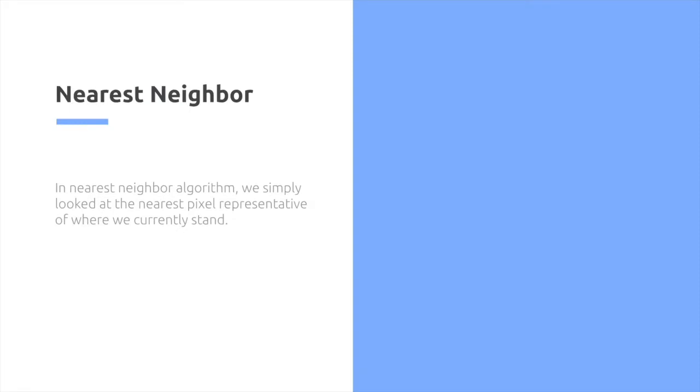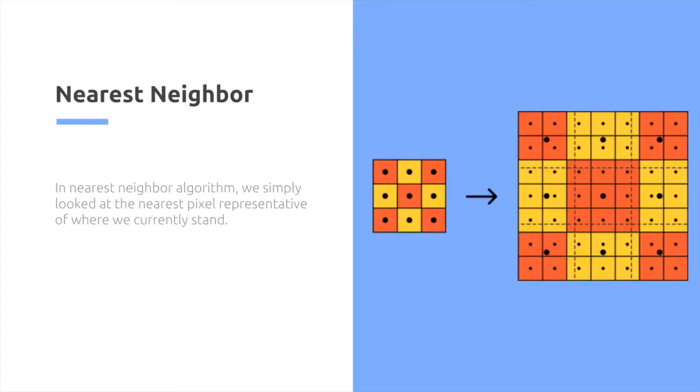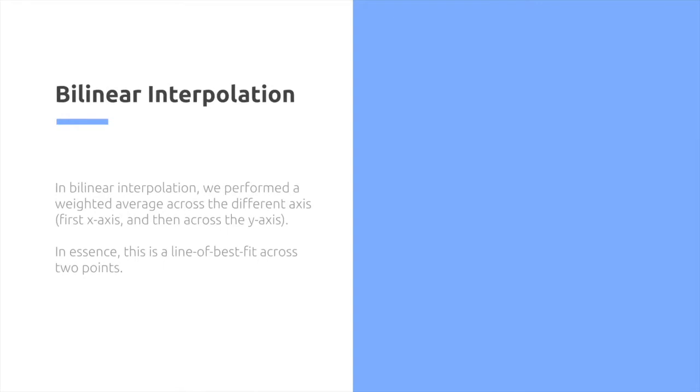For the nearest neighbor, we looked at the nearest pixel representative of where we currently stand. We did something like this. We simply looked at the nearest pixel and just copied its color.